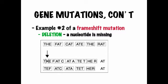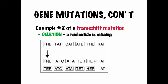Example number two of a frameshift mutation is called deletion — the opposite of insertion. Deletion is where a single base is removed. Using a sentence analogy: 'The fat cat ate the rat' — if I delete one letter and shift everything left, it reads 'te fat at a tet her,' which doesn't make any sense. Deletion shifts everything in the other direction, and again, it's going to affect the entire protein.